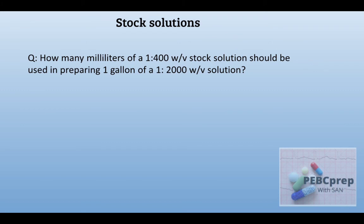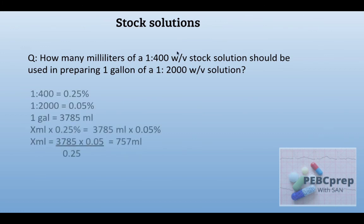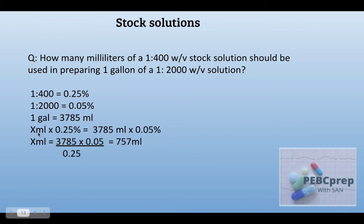Next question: how many milliliters of a 1:400 w/v stock solution should be used in preparing 1 gallon of a 1:2000 w/v solution? First we convert 1 gallon, then convert the ratios to percent. 1:400 equals 0.25%, 1:2000 equals 0.05%, and 1 gallon equals 3785 ml. You can remember this or convert on your own. When we put everything in the formula, we get 757 milliliters.